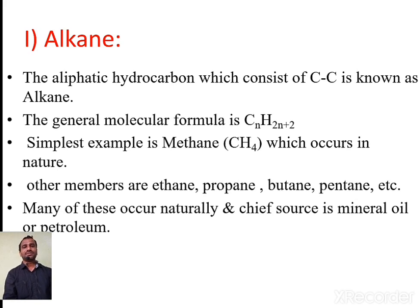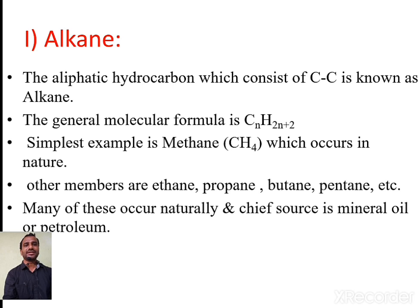Next we have to study what is an alkane in detail. An alkane is an aliphatic hydrocarbon which consists of carbon-carbon single bonds in the molecule. The general molecular formula for alkanes is CₙH₂ₙ₊₂. The simplest example is methane gas with molecular formula CH4, which occurs in nature. Other simple members of the alkane family are ethane, propane, butane, and pentane. Many alkanes occur naturally, and the chief source is mineral oil or petroleum.